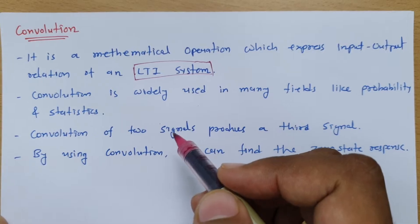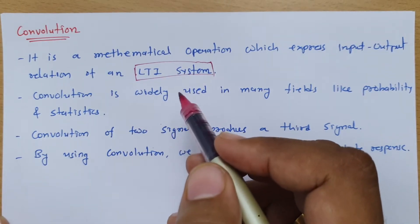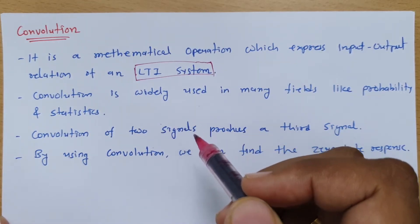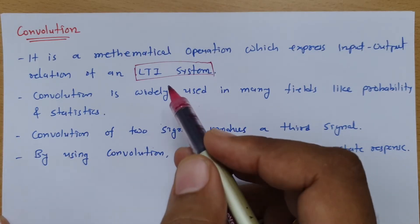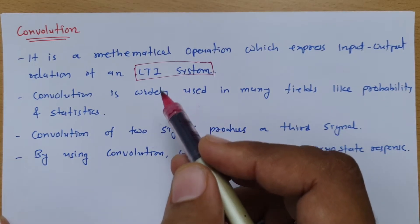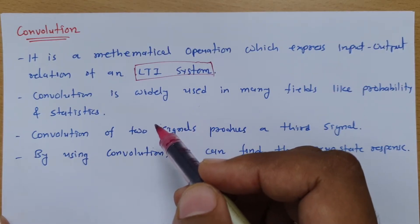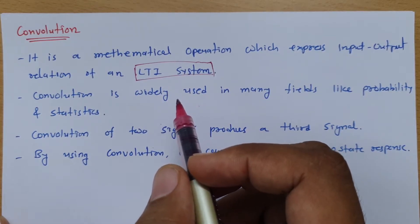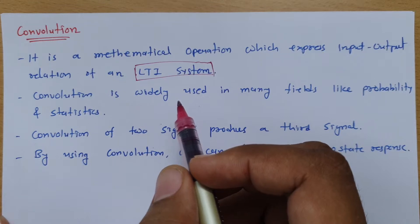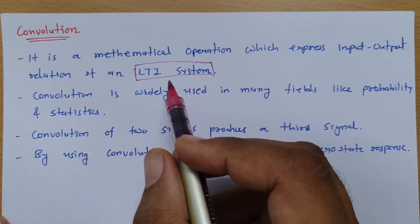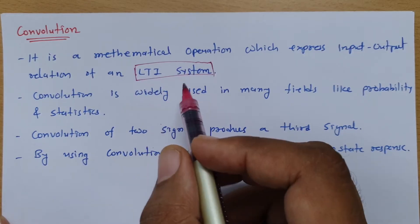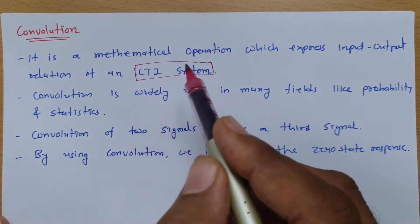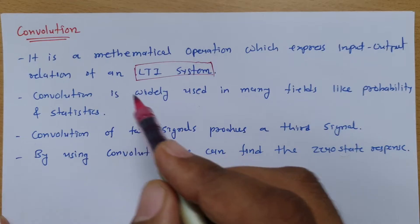LTI means linear time invariant system. The system should follow linearity as well as the time invariance property, which I have already explained in my signal and system lecture series. In a linear system, the system should follow the superposition principle, while in the case of time invariance, the system's characteristics should not change with respect to time. If a system follows both linearity and time invariance, it is called a linear time invariant system, and convolution is the mathematical operation expressing its input-output relation.